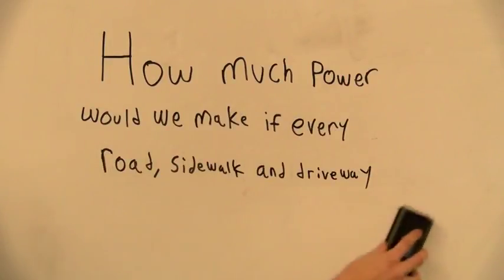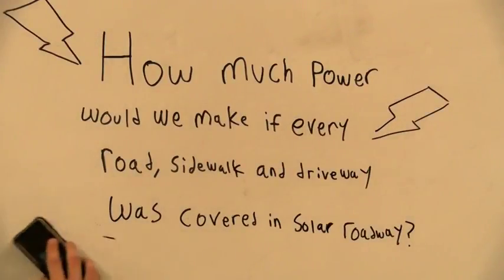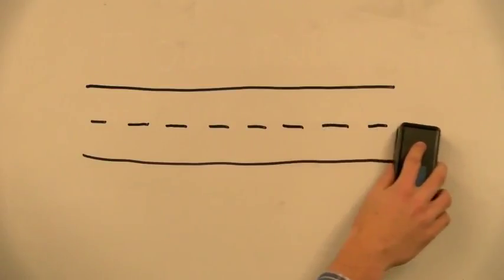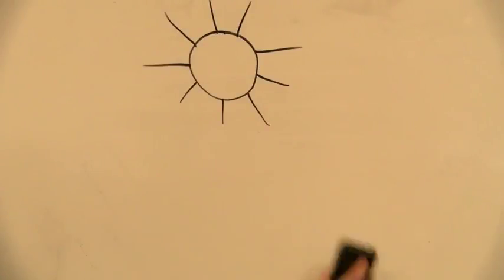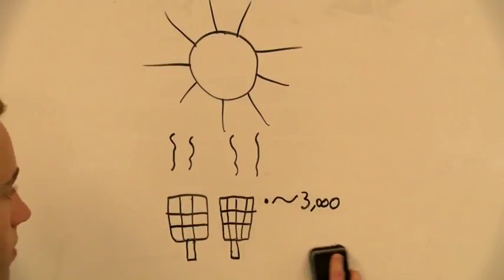How much power can we make if every road, sidewalk, and driveway was covered in solar roadway? Roads, sidewalks, and driveways in the United States, not including Alaska and Hawaii, make up about 132 million square feet. An average panel can produce about 3,000 kilowatt hours a year, and an average one of these road panels are 15.6 square feet.